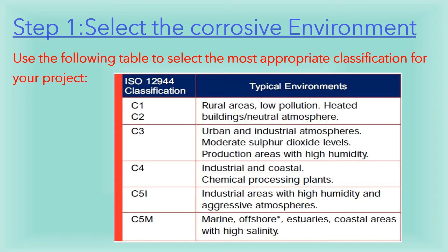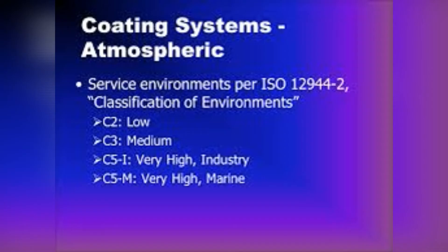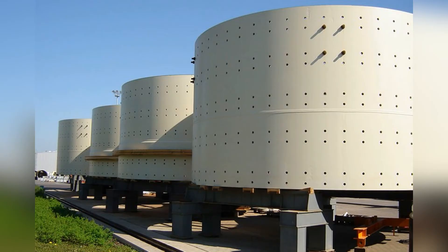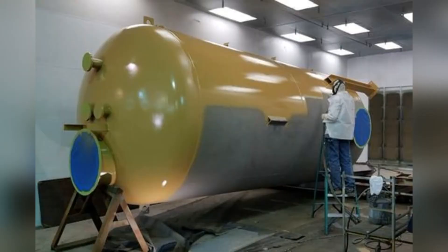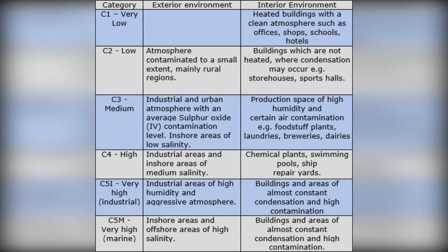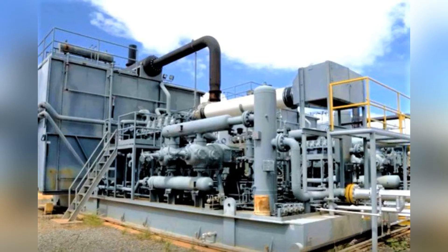Examples of C2 include depots, warehouses, and sports halls. C3 is medium — most rural and urban areas with low sulfur dioxide, acid, alkali, and salt pollution. C4 is high — urban and industrial atmospheres with moderate sulfur dioxide pollution and/or coastal areas with low salinity. C5 is very high — industrial areas with high humidity and aggressive atmospheres.